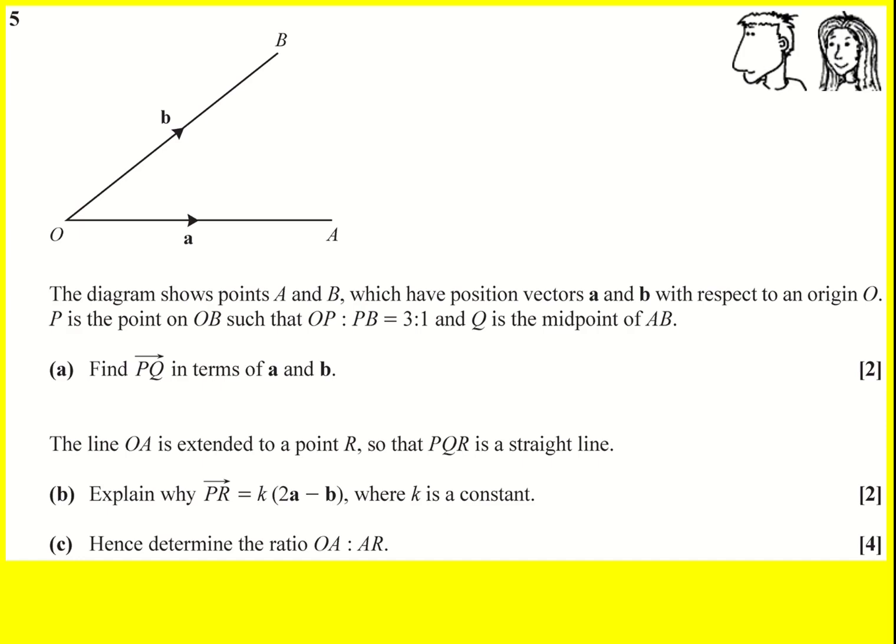Let's take a look at this diagram. We've got O and B and then vectors little a and little b. Then we're told that P is the point on OB such that OP to PB is in the ratio 3 to 1.